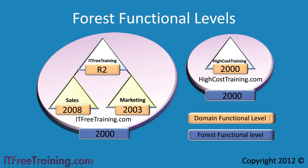In this example, the IT free training domain is at the Windows Server 2008 R2 domain functional level. The sales domain is at the Windows Server 2008 domain functional level. The marketing domain is at Windows Server 2003 domain functional level. There is also another forest called high cost training with one domain. They did not put the money into upgrading their technology so they are still at domain functional level of Windows 2000. So now you have two forests, both currently at Windows Server 2000 forest functional level.